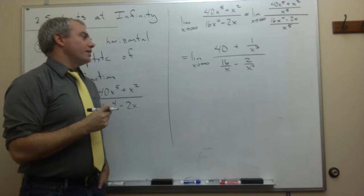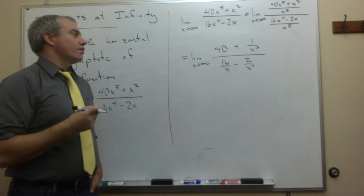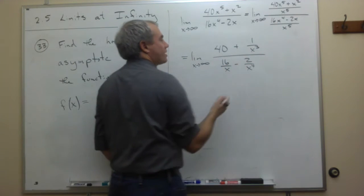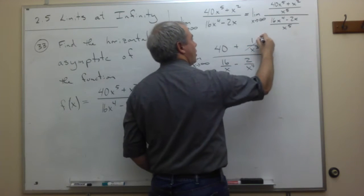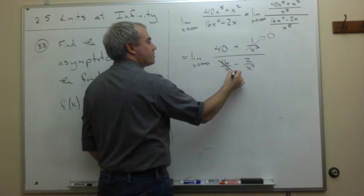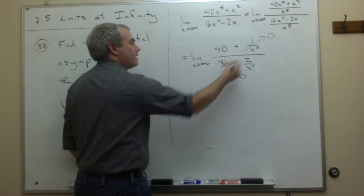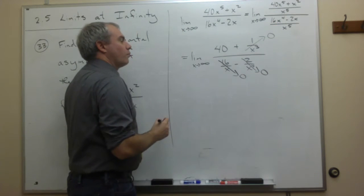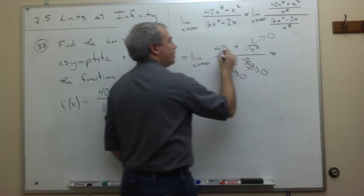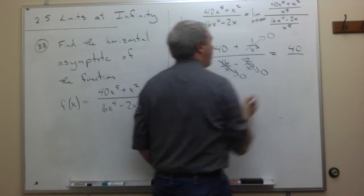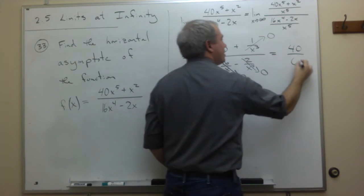And now I want to take the limit as x goes to infinity. As x goes to infinity, 1 over x cubed gets very small and goes to 0. 16 over x gets small and goes to 0. And 2 over x to the fourth gets small and goes to 0. So what am I left with here? On the top, I just have 40 plus 0, 40. And on the bottom, I have 0.